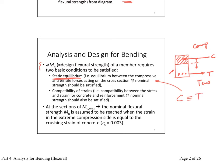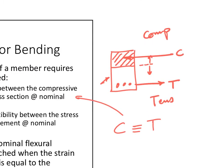The concrete below the neutral axis is under tension, but we ignore it because we assume a cracked section — concrete will not resist in the tension zone. So C equals T: C is the compression force in concrete at the compression side, and T is the tension force of the steel at the tension side. Together they form a moment couple equal to C or T times the distance between them.